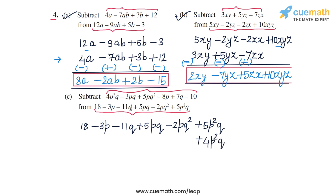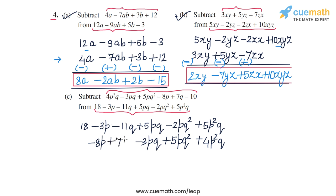The terms in the first expression are: 4p²q written below 5p²q, then minus 3pq written below plus 5pq, then plus 5pq² written below minus 2pq², then minus 8p written below minus 3p, then plus 7q written below minus 11q, and finally minus 10 written below 18. This is how we write the two expressions.